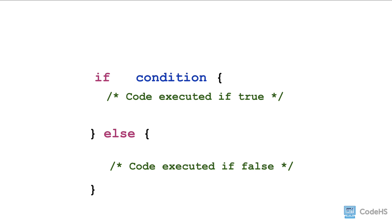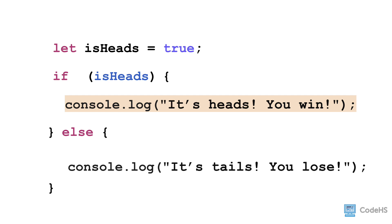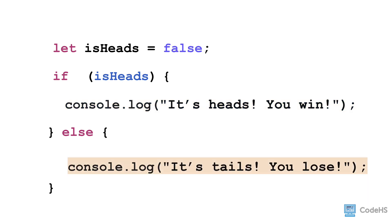We read an if-else statement like this: if a condition is true, execute this code; otherwise execute this other code. This gives us the ability to program two options — one set of code for if the condition is true, and another set of code for if the condition is false. Let's expand on our previous example. If the isHeads variable is true, then the same statement will print: 'it's Heads, you win'. However, if isHeads is false, then the code inside of the else code body will run.